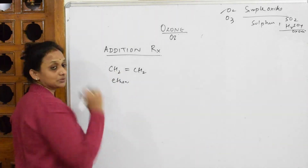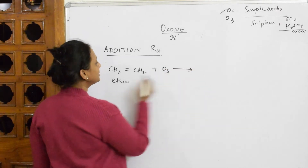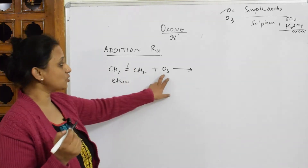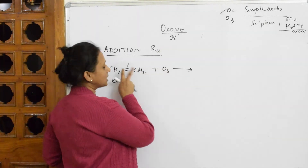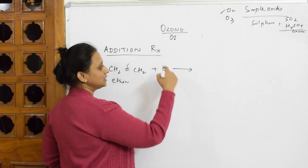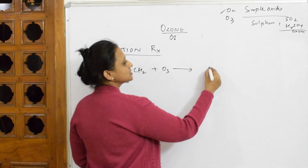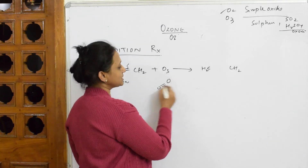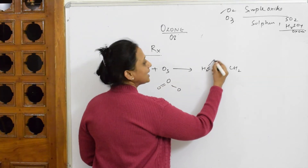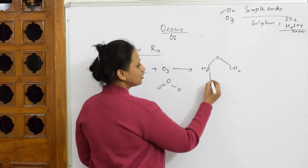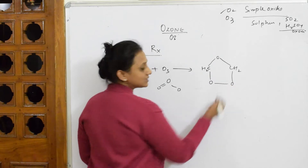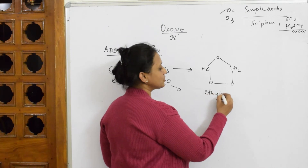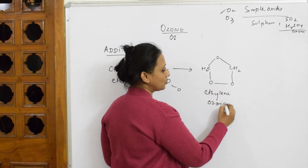I'm going to pick up an alkene — ethene, which has two carbons. When we add ozone to ethene, the double bond — which has a sigma bond and a pi bond — is going to break. The ozone adds around this double bond in the form of a ring. One oxygen adds here, one more here, and one more here, forming a compound called ethylene ozonoid.